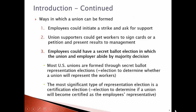There are several ways in which a union can be formed. Employees can initiate a recognition strike and ask for support to have the company automatically recognize a union. Union supporters could get workers to sign cards or a petition and present the results to management, and management could voluntarily decide to negotiate with the union. Or, more likely, employees could have a secret ballot election in which the union and employer abide by a majority decision. The third way is the most common form of how a union gets into a workplace.